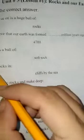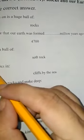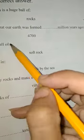Earth formed as a ball of hard rock, soft rock, and molten rock. The correct answer is molten rock.